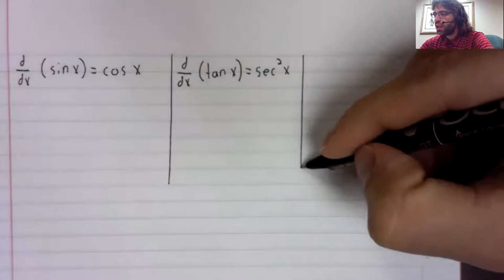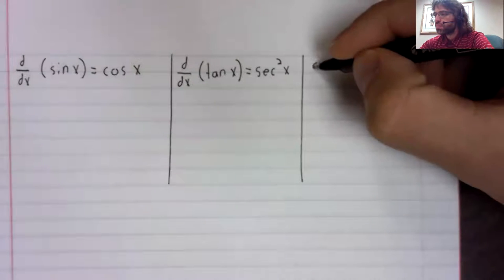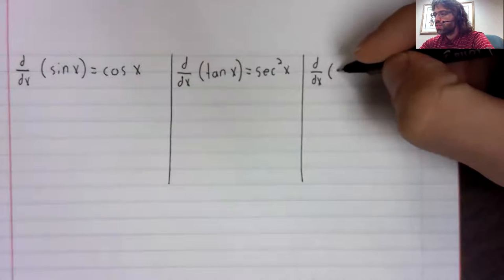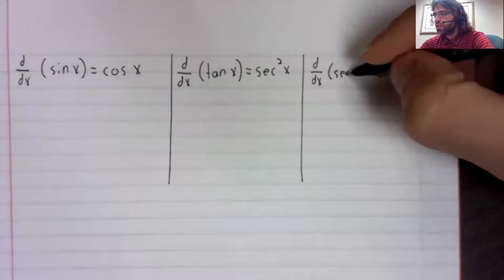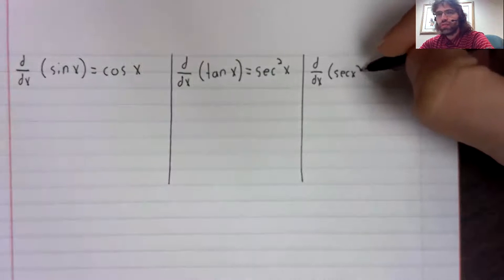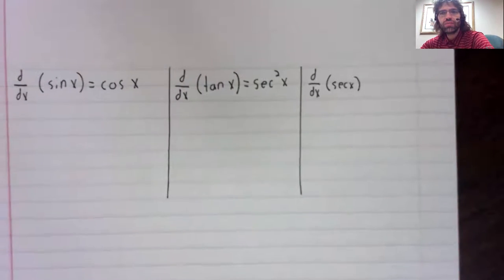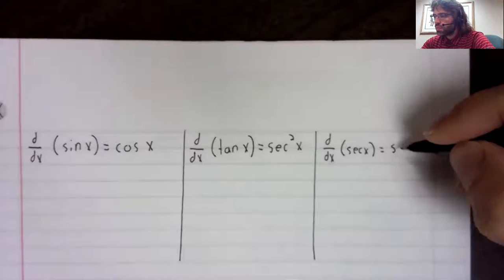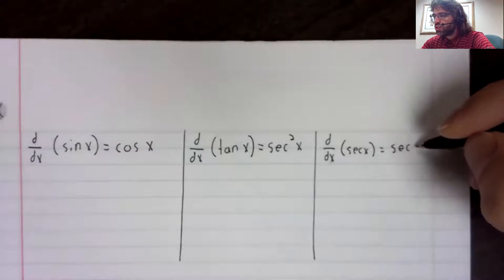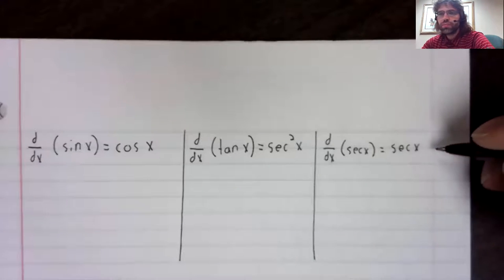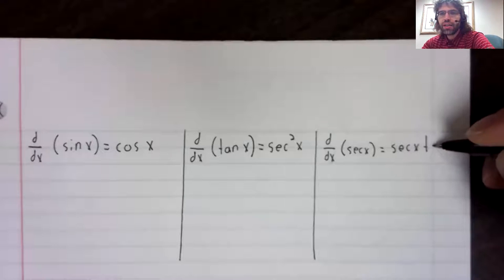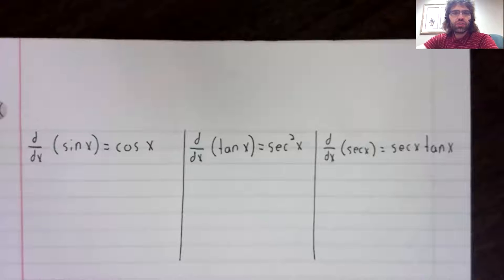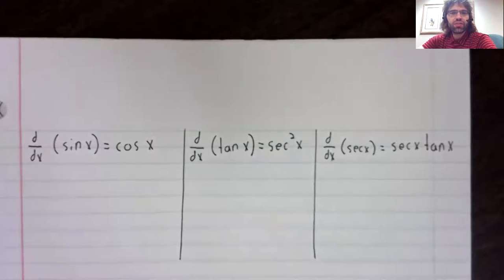And then we'll state the derivative of secant, which is secant of x times tangent of x.